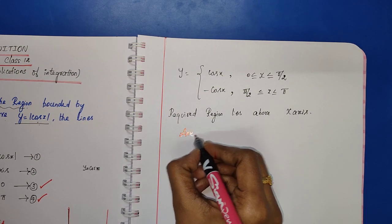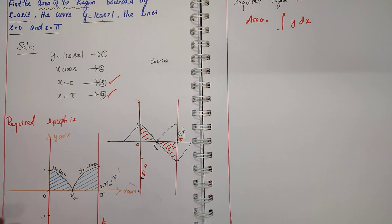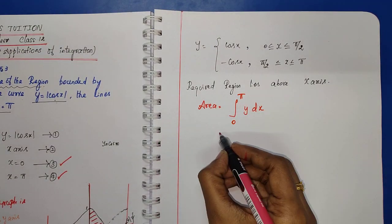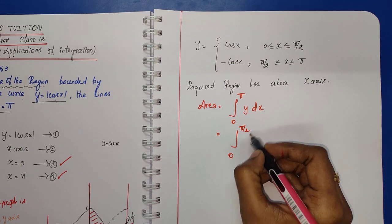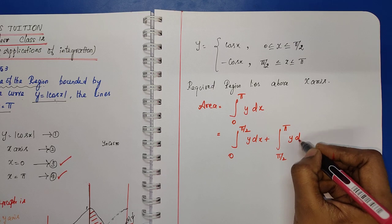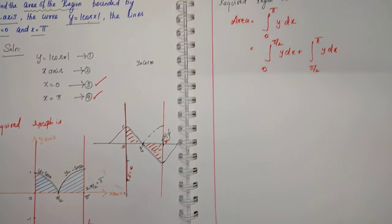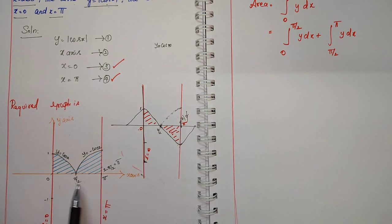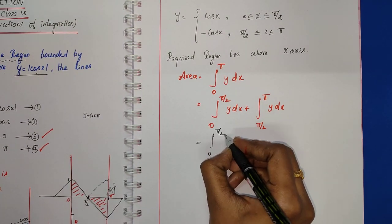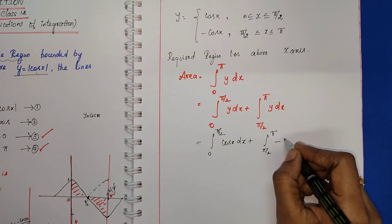Therefore, the area is equal to the integral of y dx with limits 0 to pi. This integral can be split into: integral from 0 to pi by 2 of y dx, plus integral from pi by 2 to pi of y dx. Substituting: integral 0 to pi by 2 of cos x dx, plus integral from pi by 2 to pi of minus cos x dx.